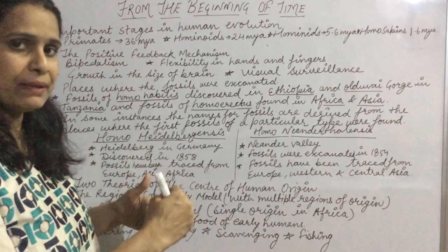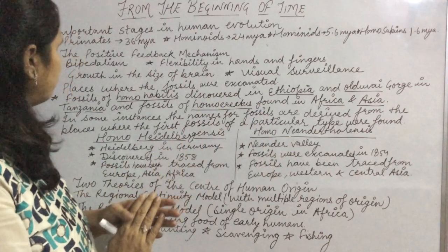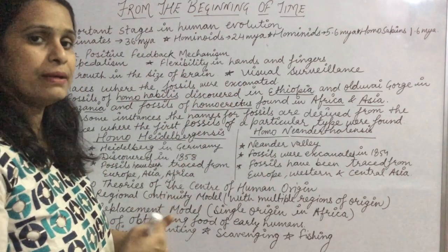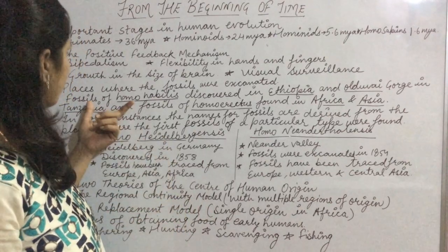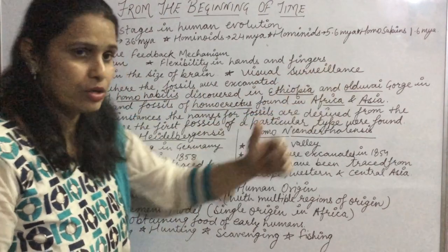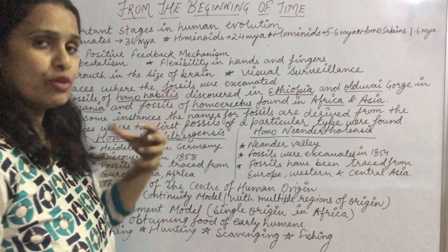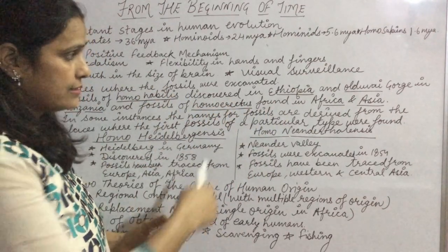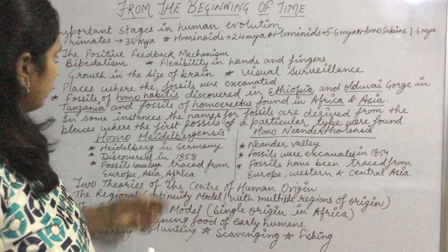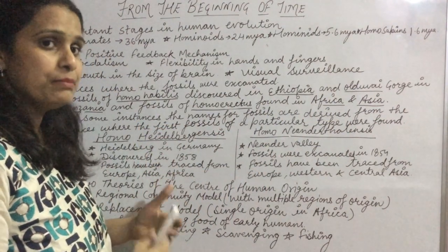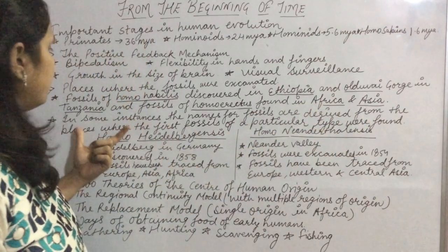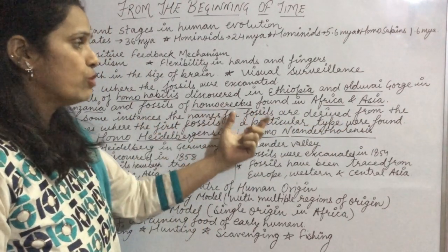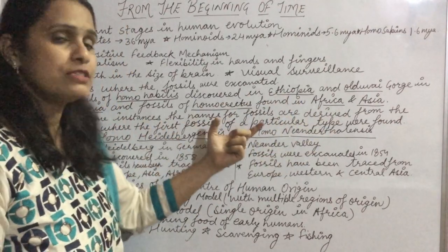Now, places where fossils were discovered: fossils of Homo habilis were discovered in Ethiopia and Olduvai Gorge in Tanzania. On the other hand, fossils of Homo erectus were found in Africa and Asia. In some instances, the name of fossils is derived from the places where the first fossil of that particular type was found.